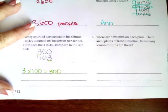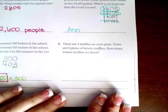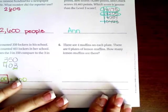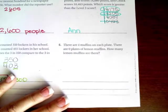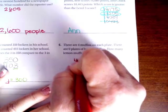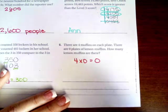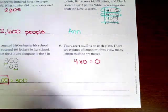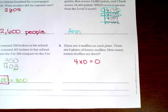Number six, there are four muffins on each plate. There are zero plates of lemon muffins. How many lemon muffins are there? You guys don't need me for this. Four times zero is zero. Anything times zero is zero. All right guys, great job, thanks for hanging out for 1.5. Come on back for 1.6, see you soon.